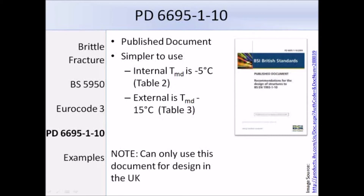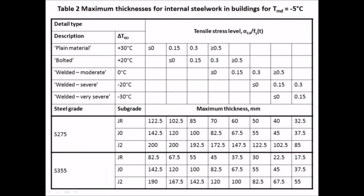This is Table 2 from PD 6695 Part 1-10, for internal steelwork where the surface temperature is taken as minus 5 degrees Celsius. On the left are the different situations, and here we will most likely be dealing with welded moderate, which is like the welded generally case used in BS 5950. You might notice the tensile stress level uses the term FY(T), which is calculated the same way as for the Eurocode. Knowing we are using welded moderate, we calculate the tensile stress level — that will be either less than 0, 0.15, 0.3, or greater than or equal to 0.5. We can then read down to the limiting thickness and read left to determine the steel subgrade. It's quite simple, and I'll demonstrate how to use the table in the upcoming examples.